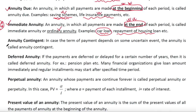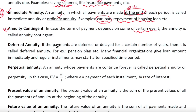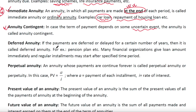Annuity contingent — when payments depend on some uncertain event or on some condition, the annuity is called annuity contingent. For example, in the case of an education policy, payments may depend on the end of the children's education. These types of annuity are called annuity contingent.